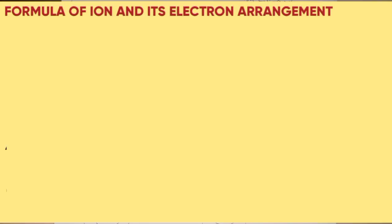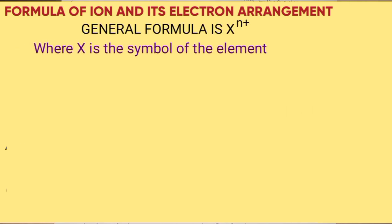Formula of cation and its electron arrangement. The general formula is X^n+, where X is the symbol of the element, while n is the number of electrons lost.